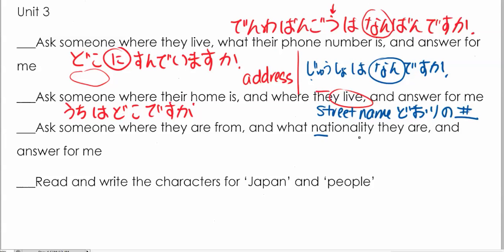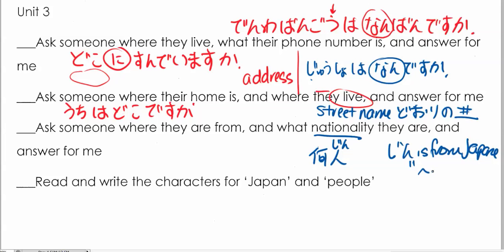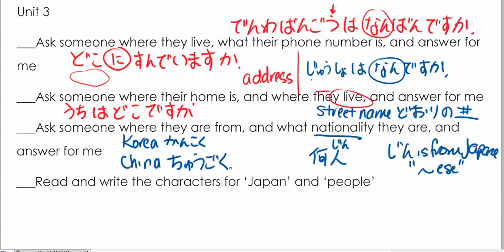For nationality, you use the character pronounced 'jin.' I used to remember it by thinking 'jin is from Japan,' which helped me remember that '-jin' means a person of that nationality — so I am Japanese, I am Taiwanese, I am Korean. You should be able to recognize different countries. Remember Korea is 'kankoku' and China is 'chūgoku.'